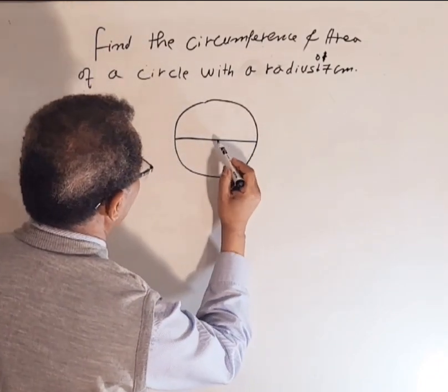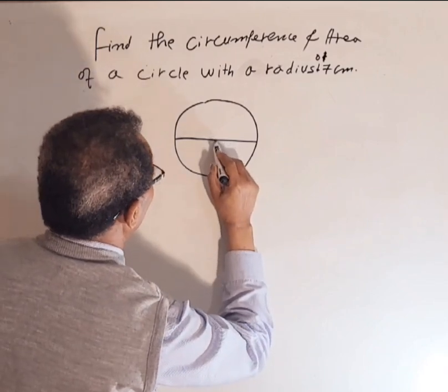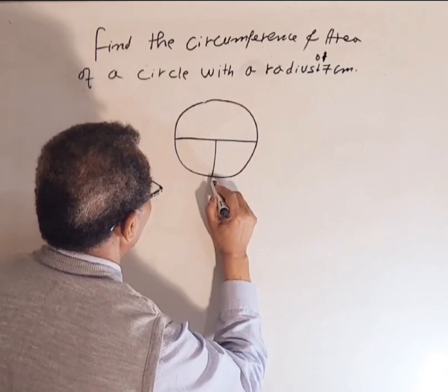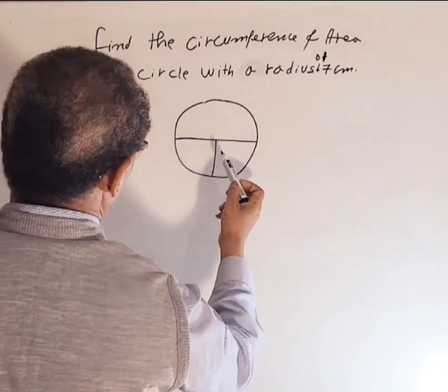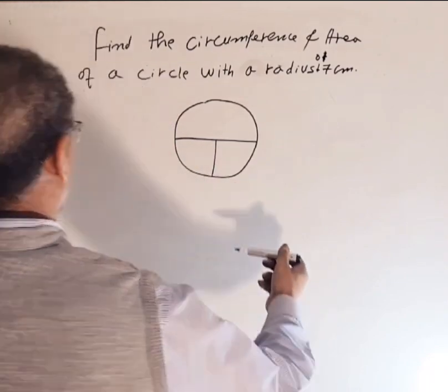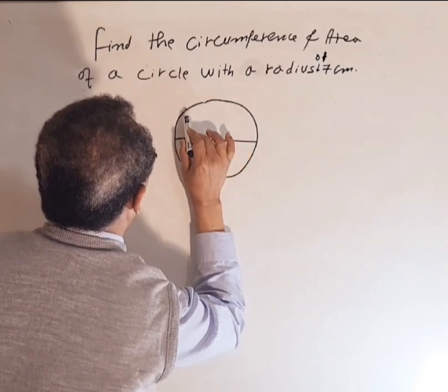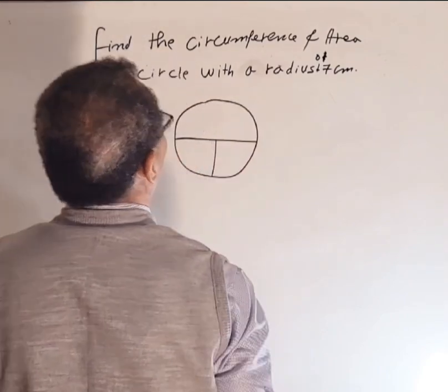For example, this one. Basically, it is half of the diameter. We also have the circumference, which is the distance all around the circle, and the area, which is the space inside the circle.